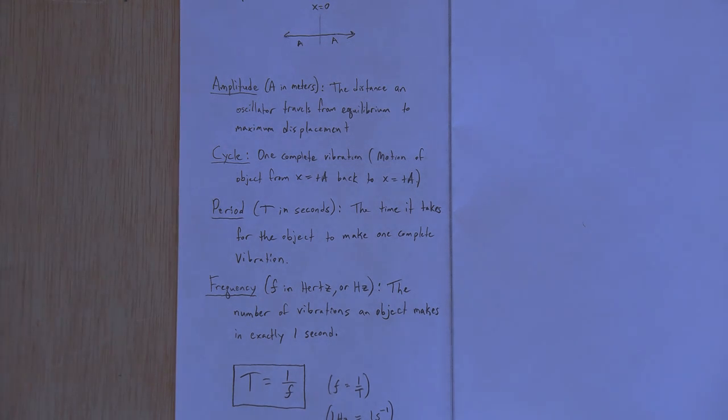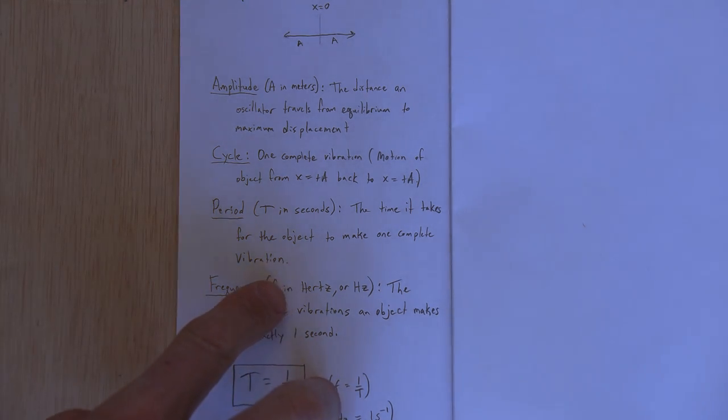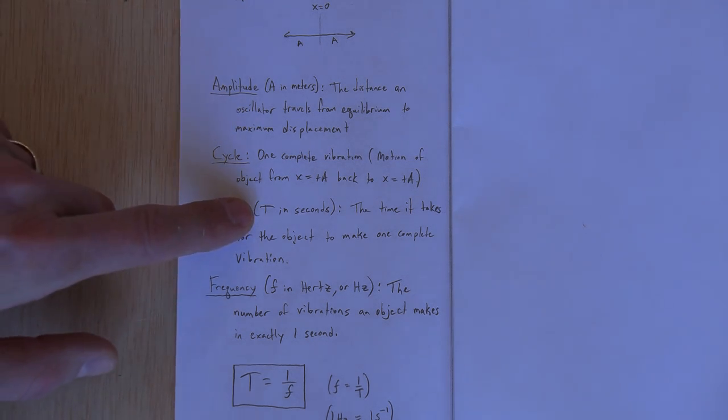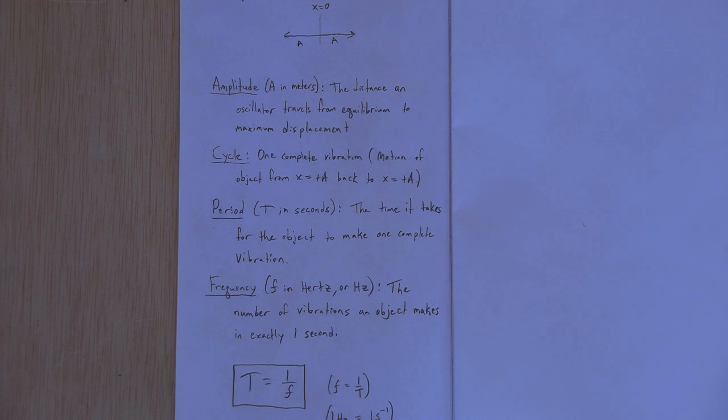And again, you can pause this video to take these notes or look at the PDF that I've attached of these notes to this assignment. Another definition, period. We use a capital T and it's measured in seconds. The time it takes for one, for the object to make one complete vibration. In physics, we use the symbol lowercase t for time, like in our kinematics equation D equals VIT plus one half AT squared. But for things that oscillate, that go and repeat themselves over and over again, we use the special symbol T, capital T, to indicate something that is happening over and over again. Like for example, another example would be the time it takes a planet to orbit the sun. We would use the symbol capital T as well. So there's another definition, period.